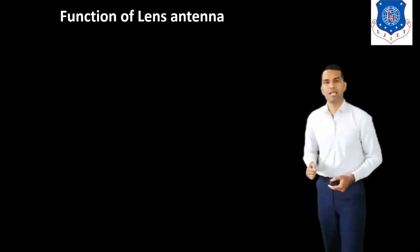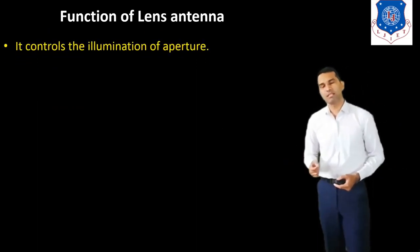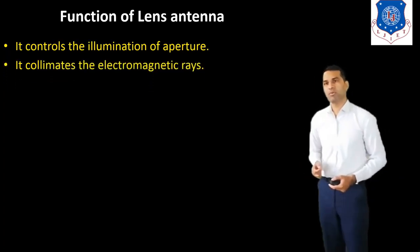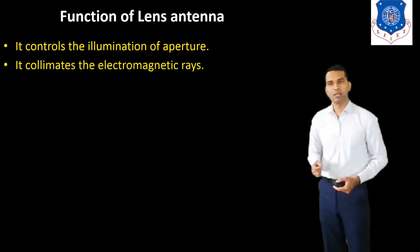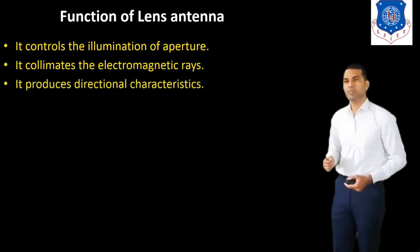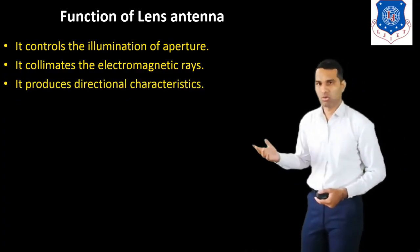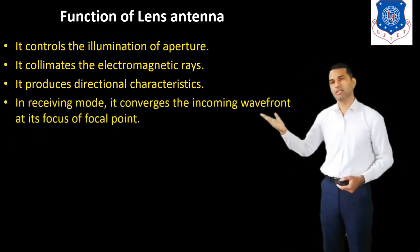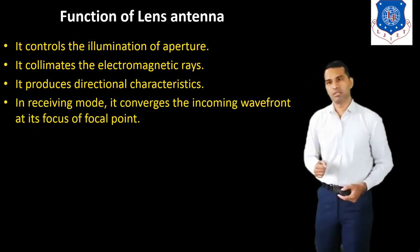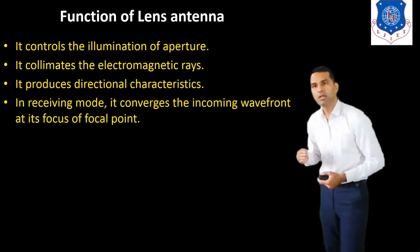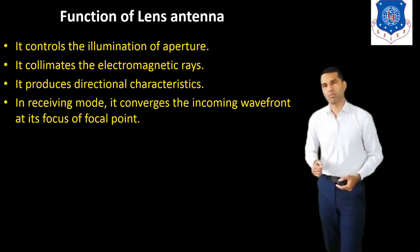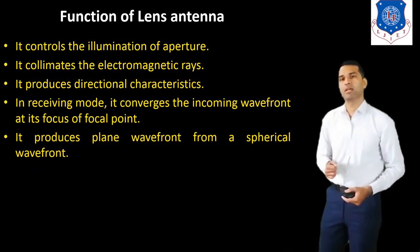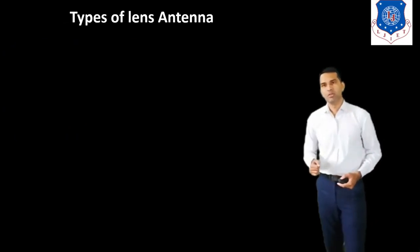Now we discuss the functions of the Lens Antenna. First, it controls the illumination of the aperture. Second, it collimates the electromagnetic ray. Third, it produces a directional characteristic. Fourth, in the receiving mode, it converts the incoming wavefront at its focal point. And it also produces a plane wavefront from a spherical wavefront.